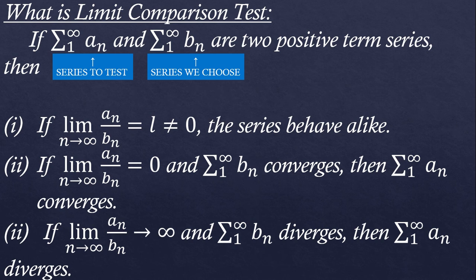The second result is if the ratio of a_n by b_n is 0 and b_n also converges, then we say that a_n converges as well. And lastly, if the ratio is approaching infinity and b_n diverges as well—so there are two conditions—we can say that a_n also diverges.